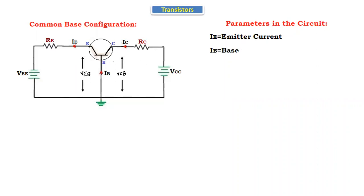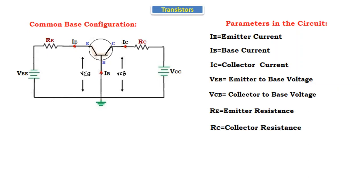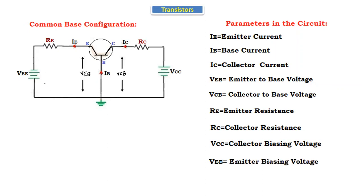IE is called as emitter current, IB is equal to base current, and IC is equal to collector current. VEB is the emitter to base voltage. VCB is the voltage between collector and the base. RE is the resistor connected to the emitter terminal, called as emitter resistance, and RC is the resistor connected to the collector terminal, called as collector resistance. VCC is called as the collector biasing voltage and VEE is called as the emitter biasing voltage.